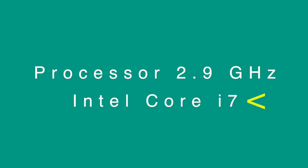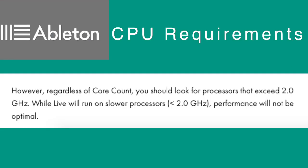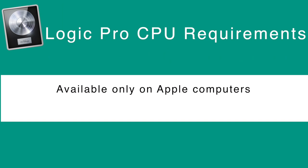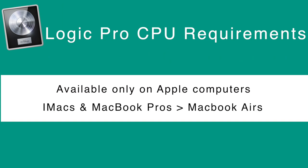With the CPU we have the number of cores and the clock speed, which is measured in gigahertz. When we look at the specs required to run Ableton, it reads: regardless of core count, you should look for processors that exceed 2 gigahertz — while Live will run on slower processors, performance will not be optimal. FL Studio also mentions 2 gigahertz as a minimum. Logic Pro is only available on Apple products; iMacs and MacBook Pros will probably have better CPU performance over the MacBook Airs. So any modern CPU with at least 2 gigahertz should be fine, but more is favorable.